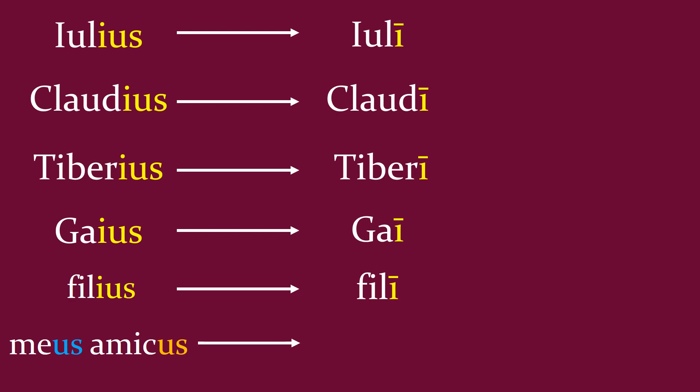Meus amicus — the word meus, which means my, is also irregular. We're going to say mi amice, my friend. Come here, my friend.